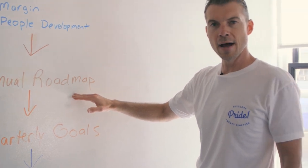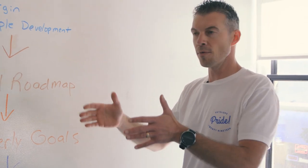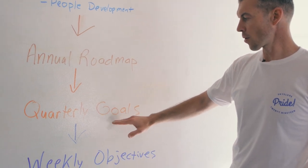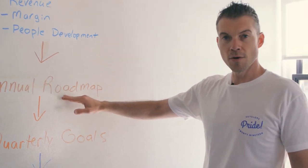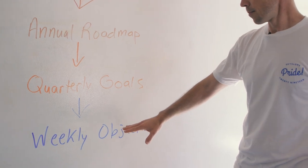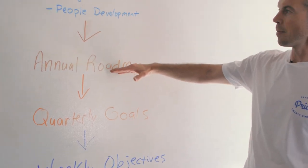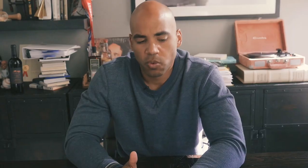They use the annual roadmap to plan it out — what are we going to do in Q1, Q2, Q3, and Q4. That breaks down to quarterly goals in pursuit of the annual roadmap, and then down to weekly objectives. This is how we use the four box — to drive what weekly objectives we're hitting or not hitting in pursuit of quarterly goals, the annual roadmap, and overall corporate goals.